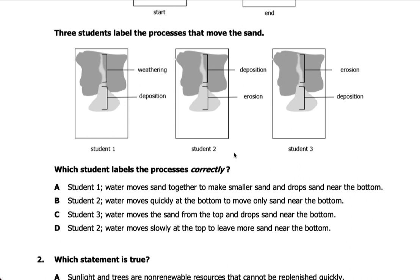The answer is student three. Water moves the sand from the top and deposits it near the bottom, and this is labeled correctly. This is erosion — when water moves the sand down. The movement of sand by water is called erosion, and it deposits all the thin sand at the bottom, which is called deposition. The rest are not labeled correctly.